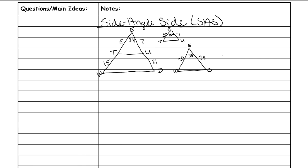Now that we have redrawn them, recognize your theorem. You are given a side, an angle, and a side — so it's side-angle-side. The next thing you want to do is check that both of your angles are congruent because they have to be. In this case, we want to make sure that this angle is 24 and that one is 24, so yes, that checks out.